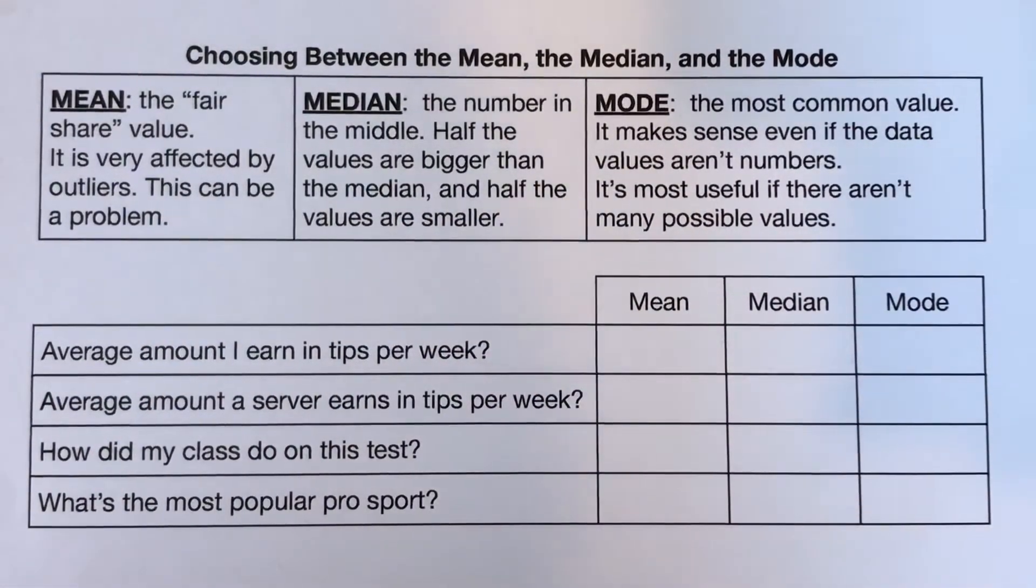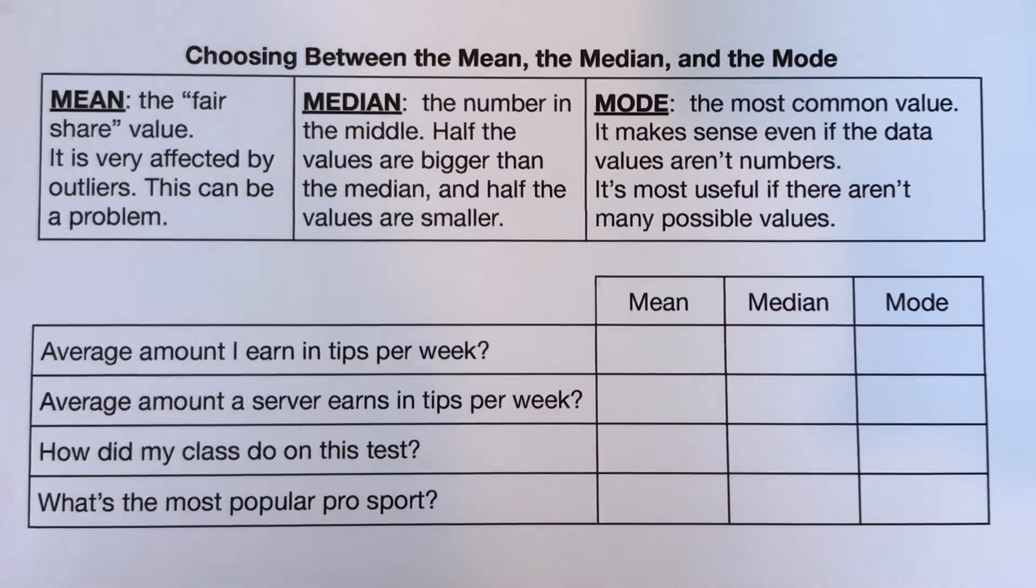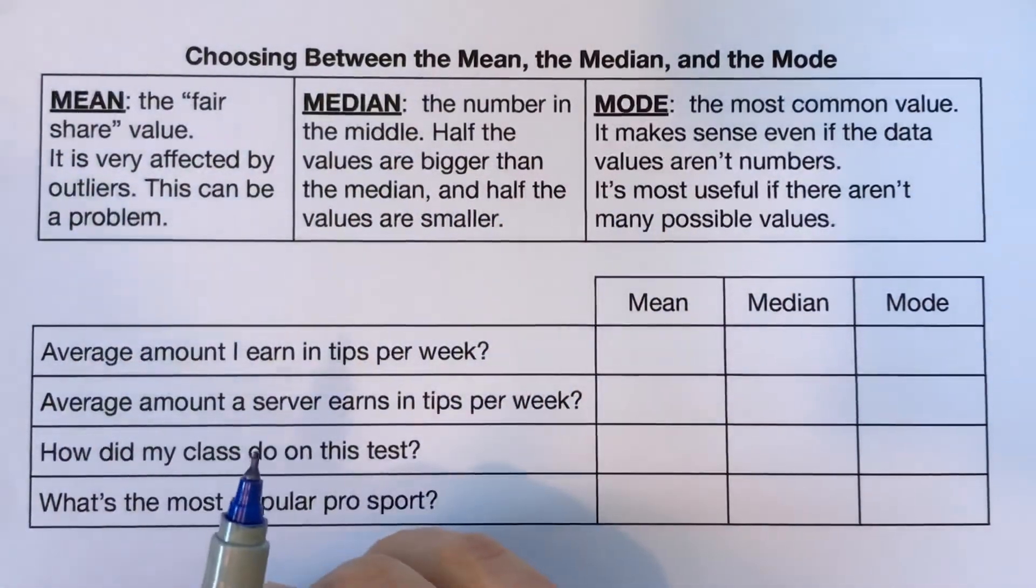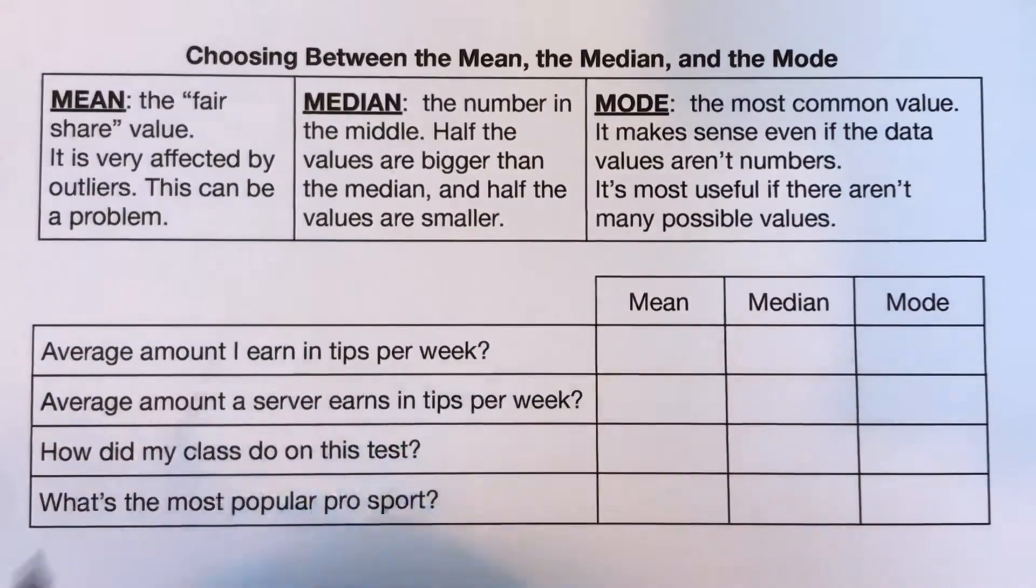And sometimes we like to just actually report all three, because they all tell us different information. But I'm still going to go through some examples to help you decide which ones might be the best in different contexts. So to decide what you need to do, the main thing you need to do is think about what each one of them means and think is this important in the context that I'm working in.